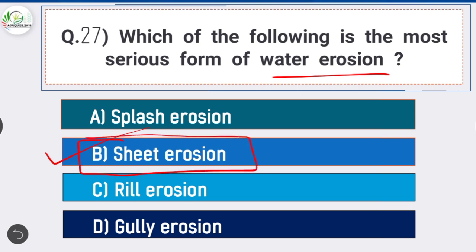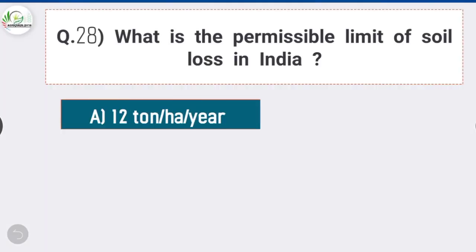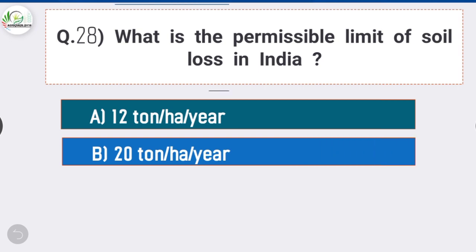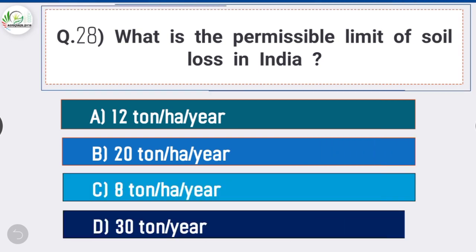Question number 28: What is the permissible limit of soil loss in India? Answer is option A, 12 ton per hectare per year.